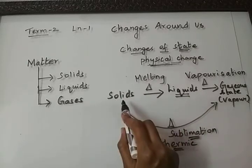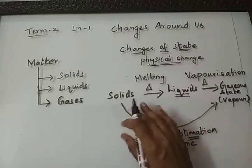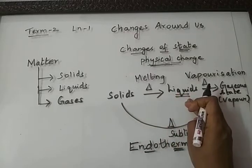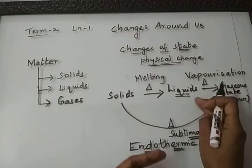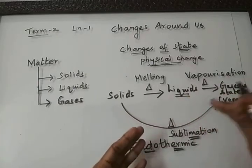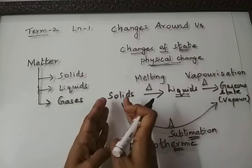On heating, they overcome the force of attraction between the particles, and so they tend to move a little apart and get converted to liquid. Again on heating, they move further apart—that is, the kinetic energy increases to the maximum—and so they get converted to vapor state. That is why solids have a definite shape and definite volume.